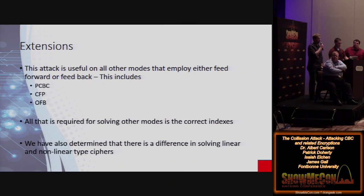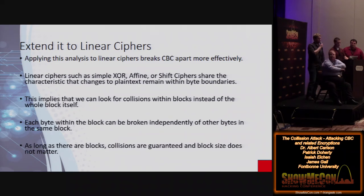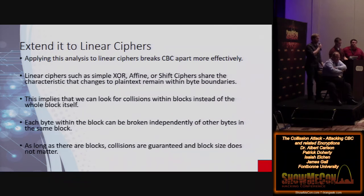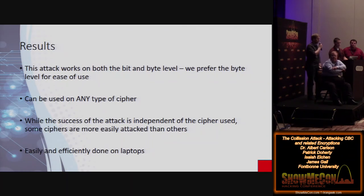One of the major things we've discovered is that there's a very key difference using this attack on linear ciphers — that is, any cipher that does not cross byte boundaries when doing its transformations. These include XOR cipher, a Vigenère cipher, shift cipher, or any combination of those in a single encryption system. With those, since they don't cross byte boundaries, instead of colliding the entire block, we can collide only by index within the block. So instead of dealing with thousands of possible combinations for larger block sizes, for a given index we only need to look at 256 possibles — the ASCII set. Given 256 blocks, we will get at least one collision, guaranteed.